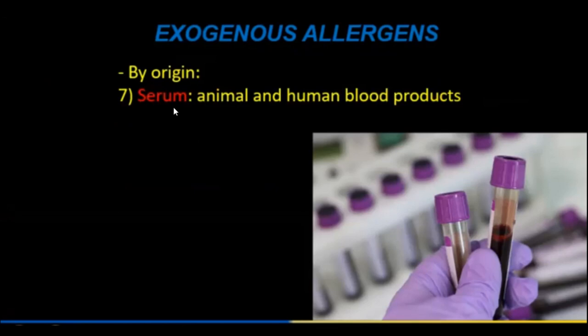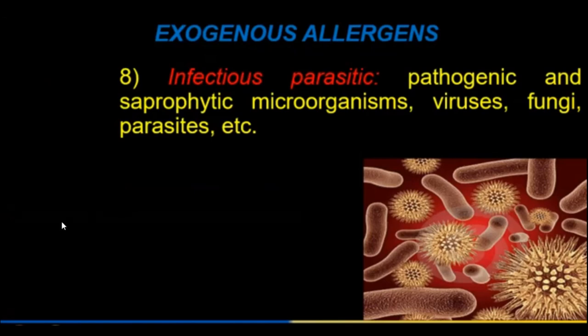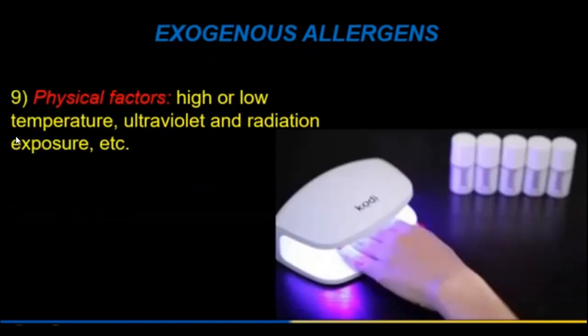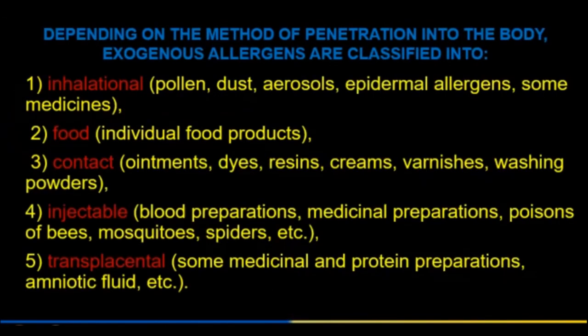Serum — animal and human blood products — may also cause allergy. Infectious allergens include pathogenic and saprophytic microorganisms, viruses, fungi, and parasites. Physical factors such as high or low temperature, ultraviolet radiation and radiation exposure can be reasons for allergy. Depending on the method of penetration into the body, exogenous allergens are classified as inhalational, food, contact, injectable, and transplacental.